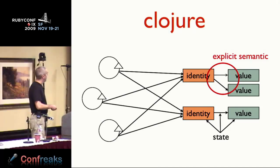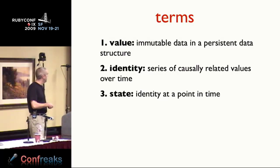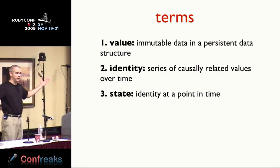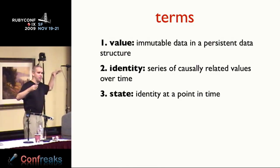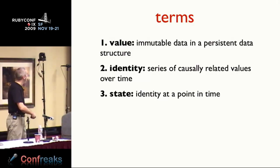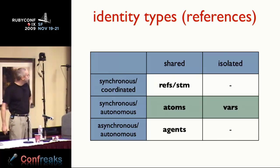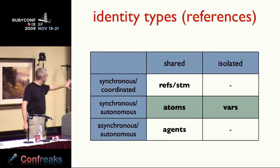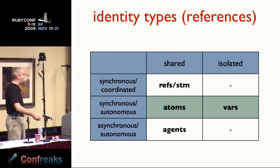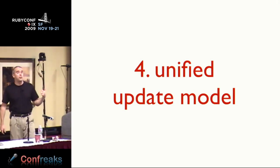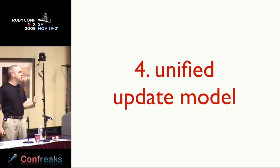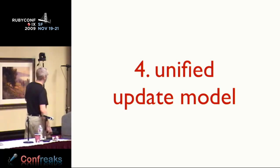Clojure's approach is that values are values — they don't slide out from under you. Identities represent things that can change over time. A value is immutable data; an identity is a series of causally related values over time. I'm Stu at time t, I'm Stu at time t+1. Like a physicist, you could play time forwards or backwards and go back to look at the immutable me at earlier points on the timeline. These identity types are managed by a set of reference types with different semantics.